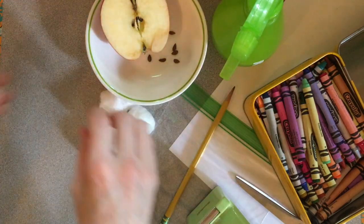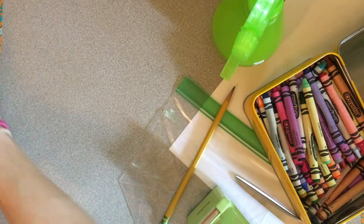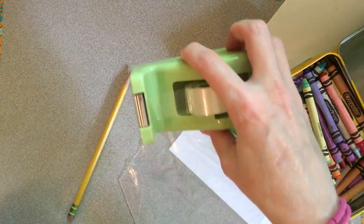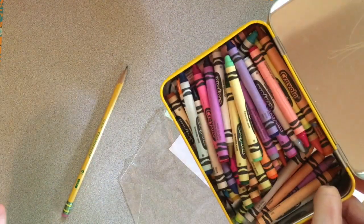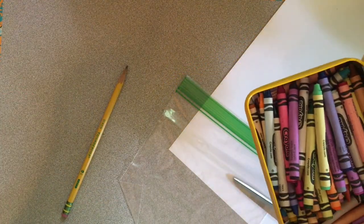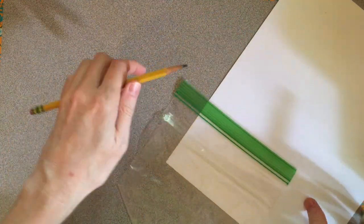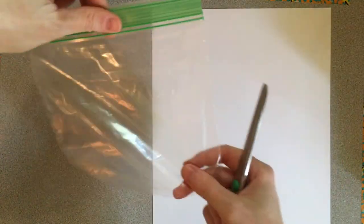We're also going to need a few other materials including cotton balls, spray bottle with water, some tape, and some mark making materials that can be crayons or markers, colored pencils, whatever you have. Then we're going to need some scissors, a sheet of paper, and a ziploc bag.